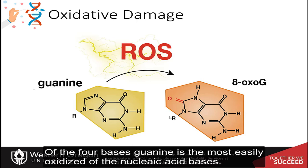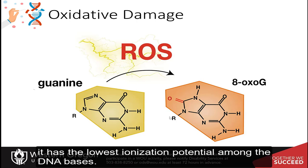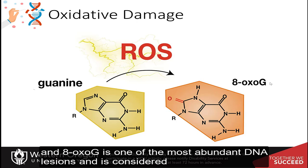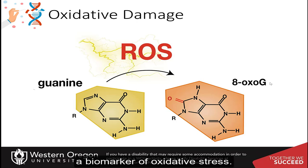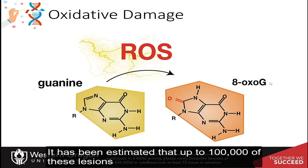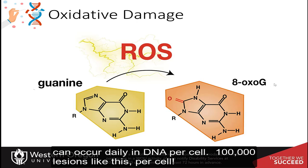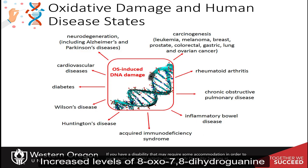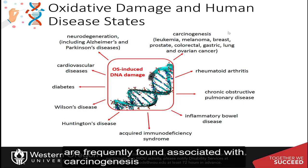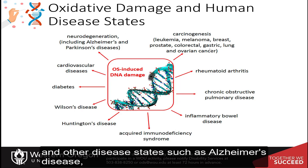Of the four bases, guanine is the most easily oxidized of the nucleic acid bases because it has the lowest ionization potential among the DNA bases. 8-oxo-G is one of the most abundant DNA lesions and is considered a biomarker of oxidative stress. It has been estimated that up to 100,000 of these lesions can occur daily in DNA per cell.